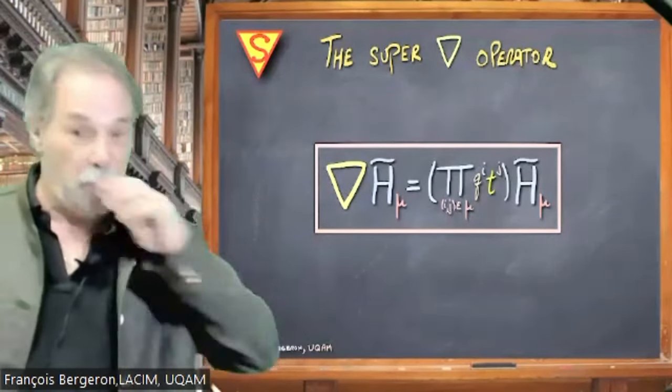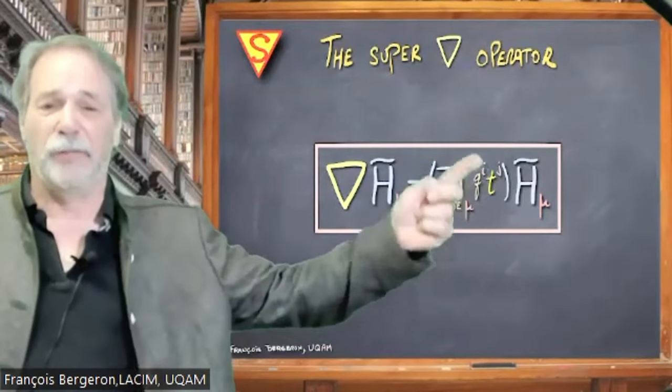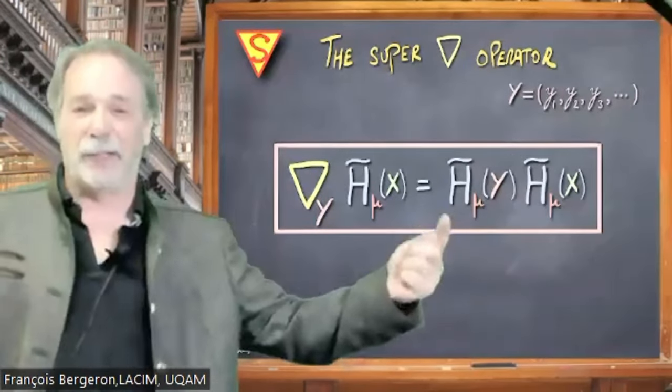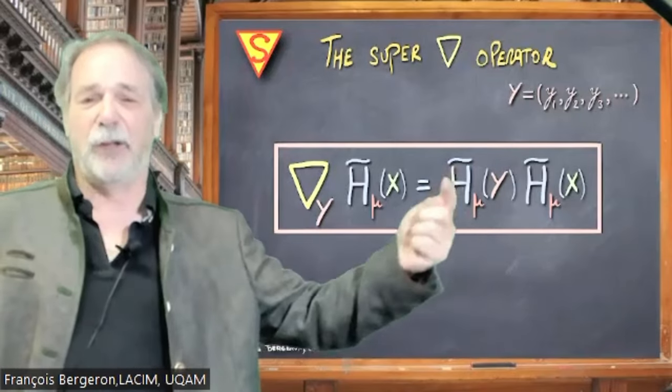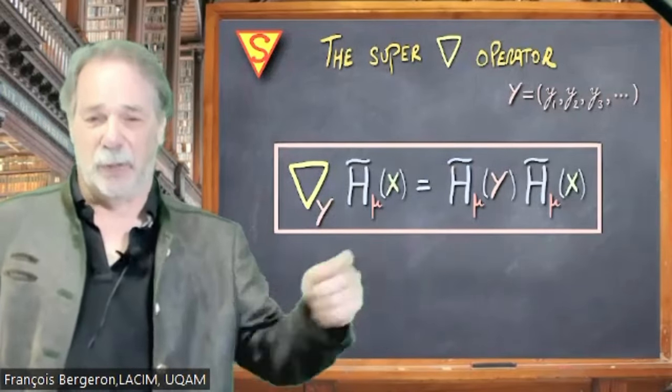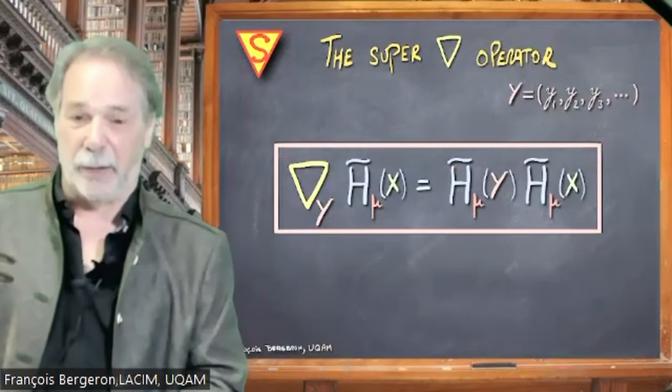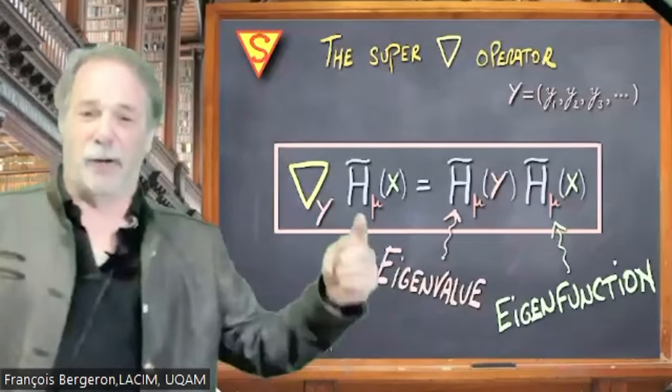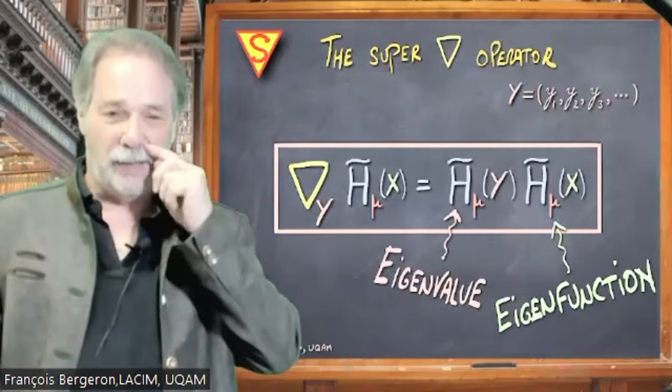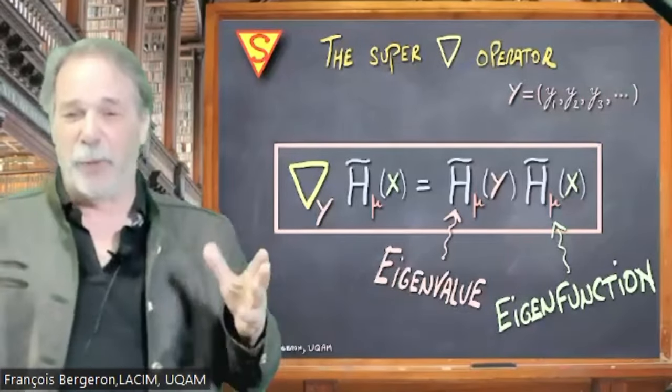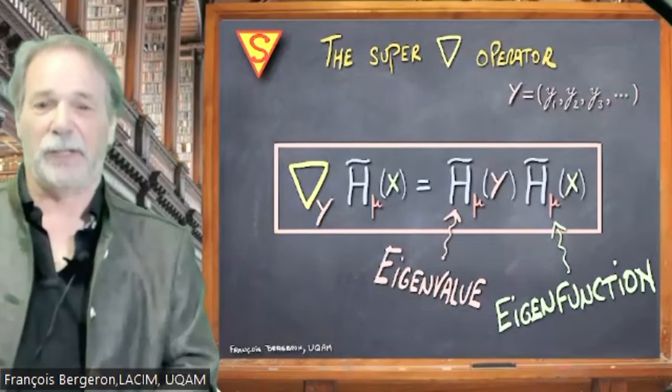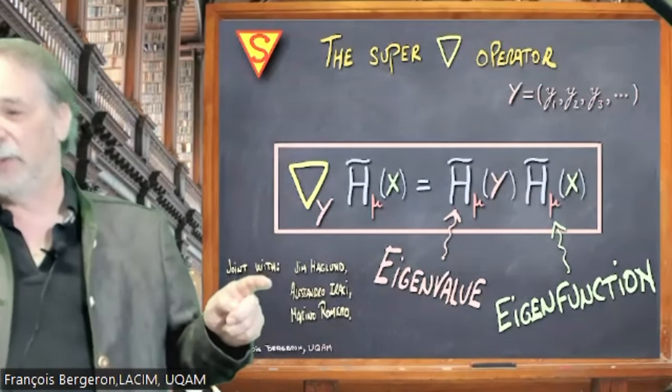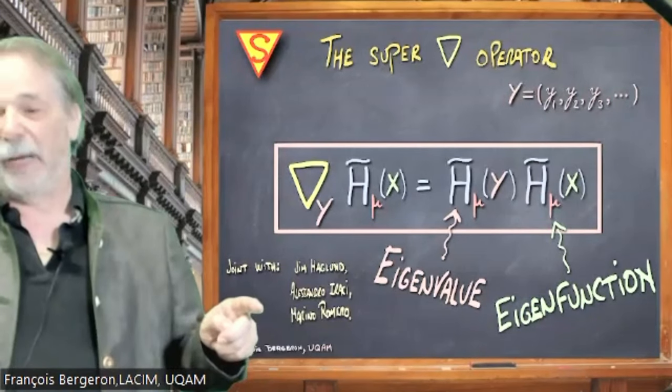So that's the Nabla of h_mu. And now, recently, we introduced a super version of the Nabla operator. So that's the super Nabla operator. By replacing, excuse me, the eigenvalue by something more complicated and a bit weird, because we consider another McDonald polynomial as the eigenvalue of the original McDonald polynomial, but in another set of variables. So there are two McDonald polynomials here. One is considered as an eigenfunction of the operator, and the other is considered as an eigenvalue. This might look weird, but it's very efficient in giving us lots of formulas. This is joint work with Jim Haglund, Alessandro Iraci, and Marino Romero.